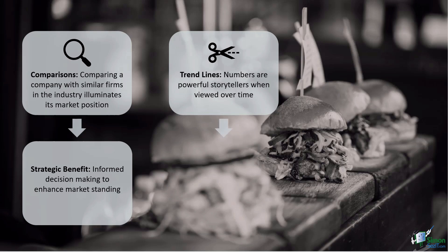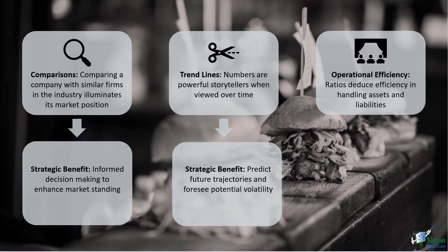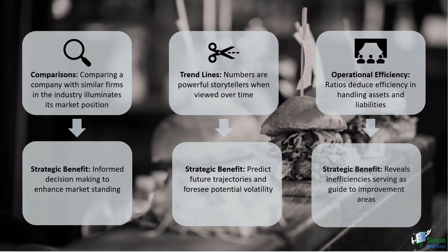It's also not just about having assets — it's about using them wisely. Financial ratios become the Sherlock Holmes of management, deducing the efficiency in handling assets and liabilities. Inefficient use results in unnecessary expenses, and ratios become the magnifying glass that reveals where improvements can be made.